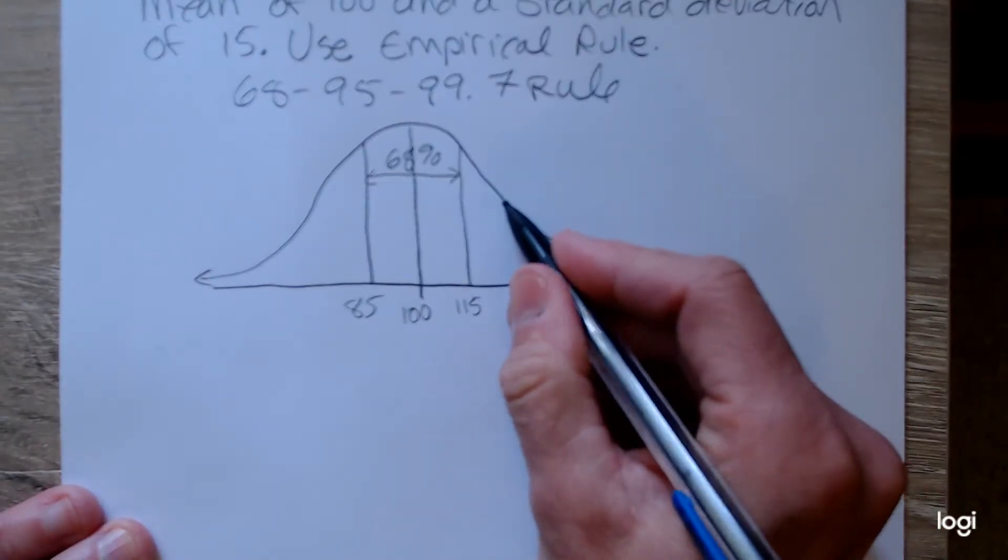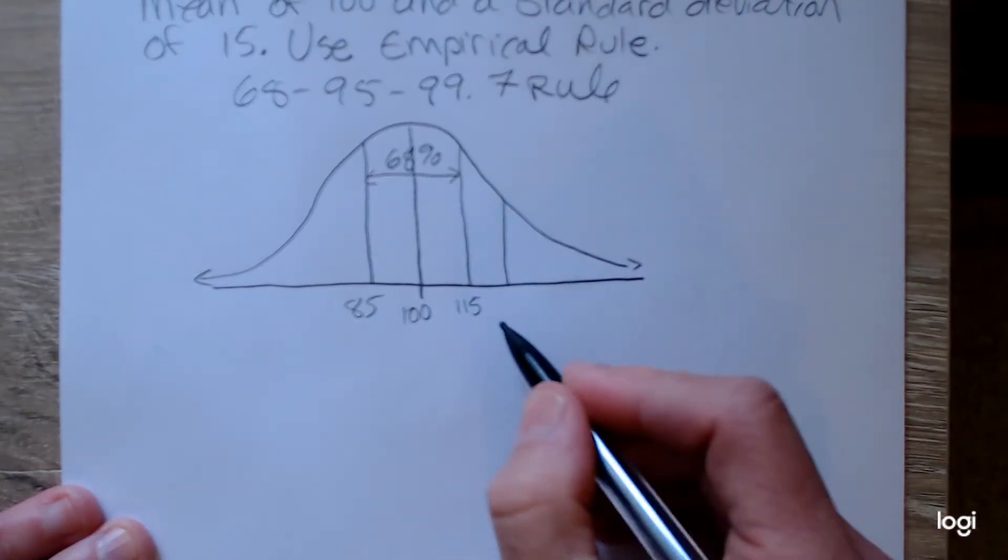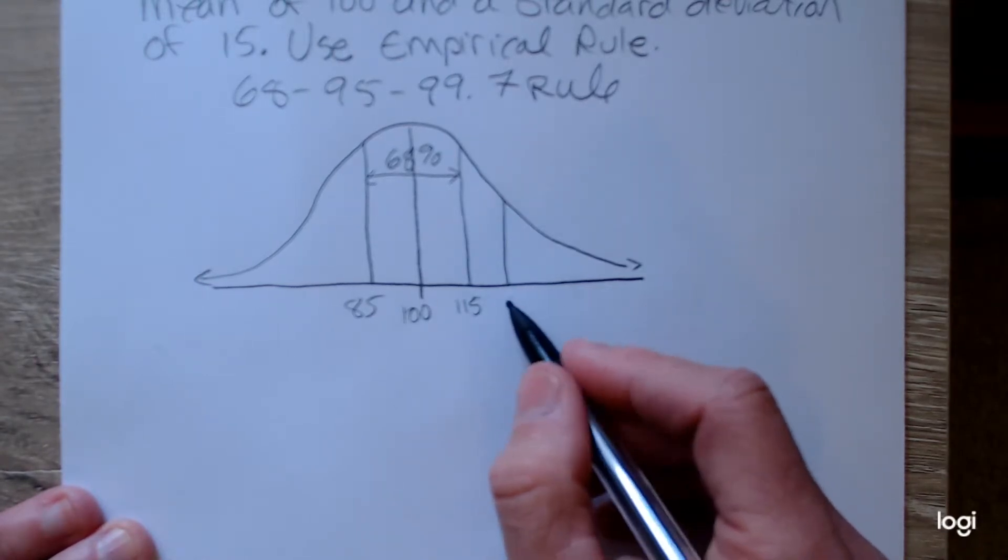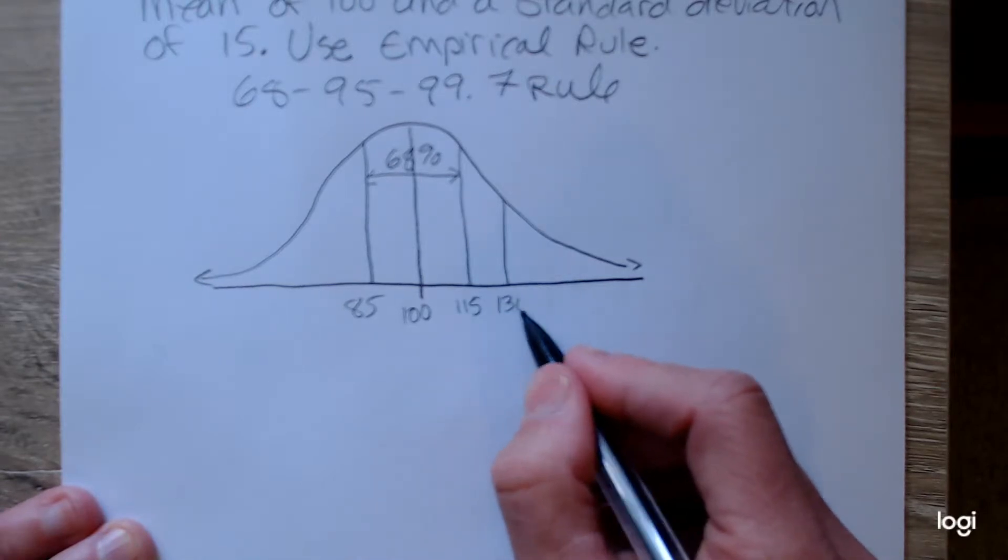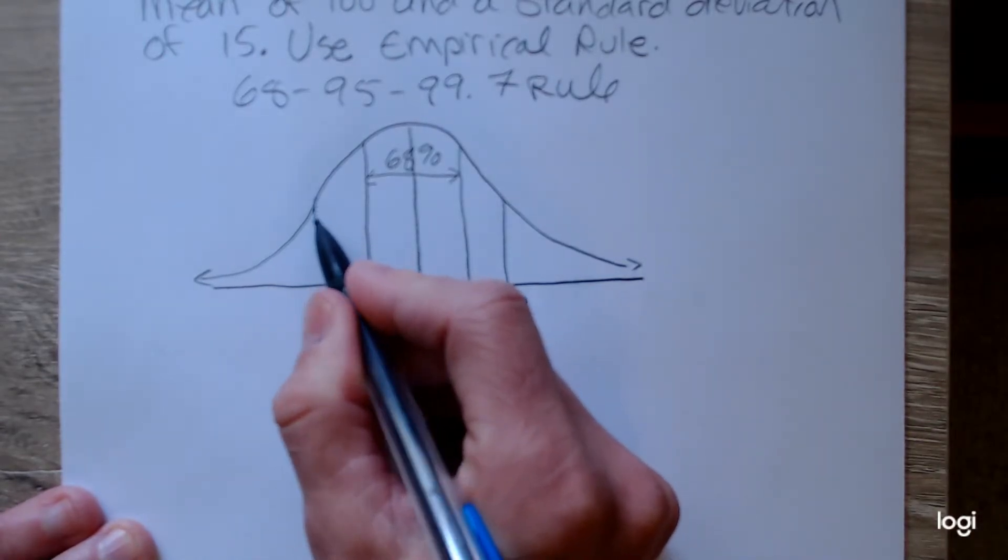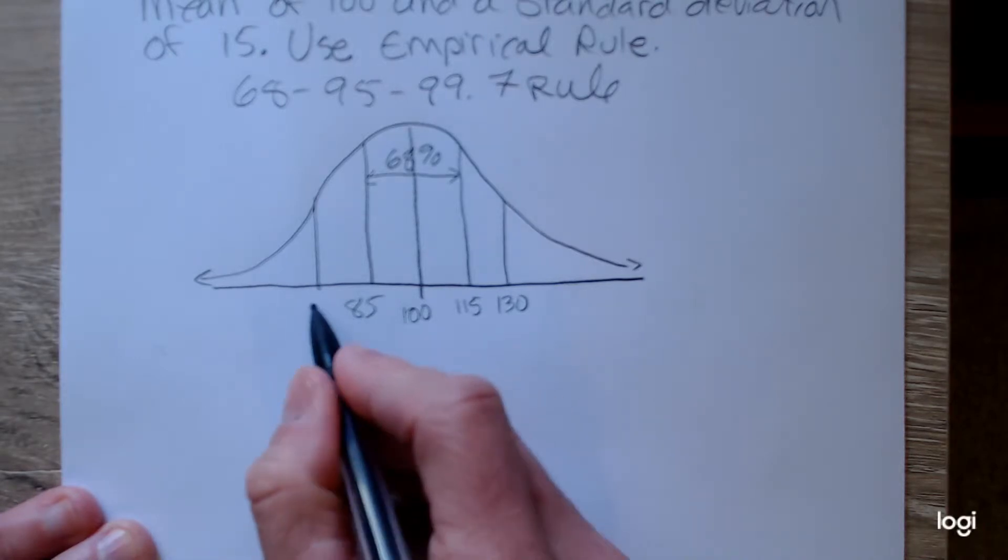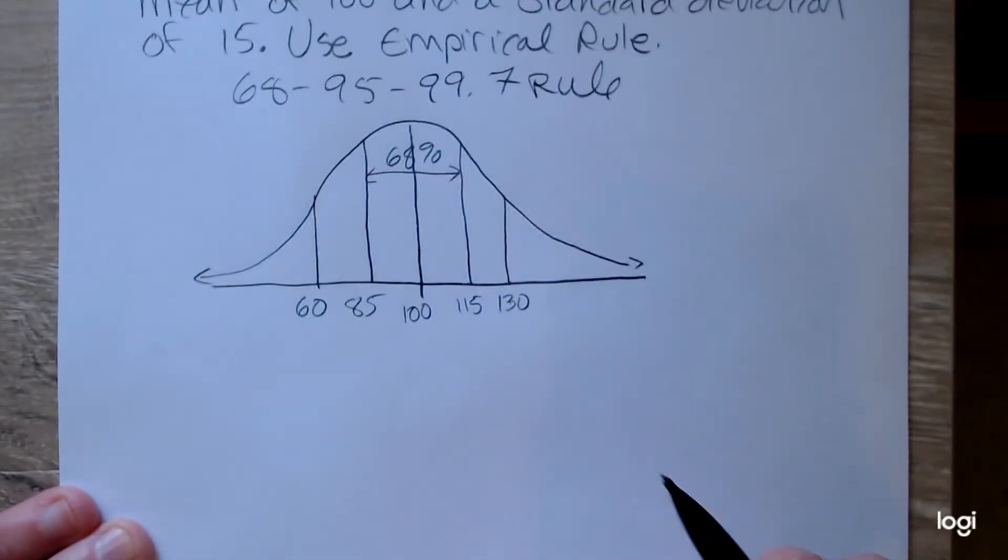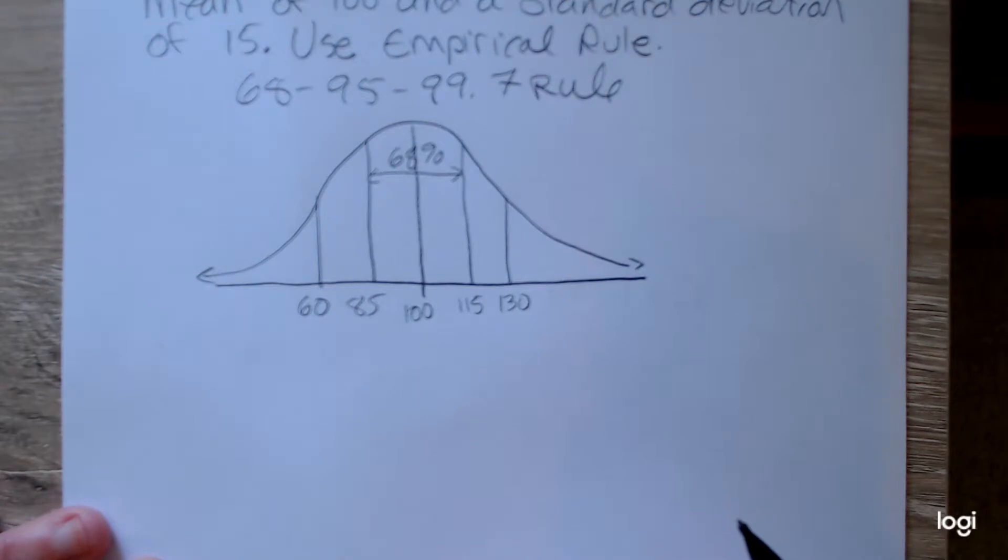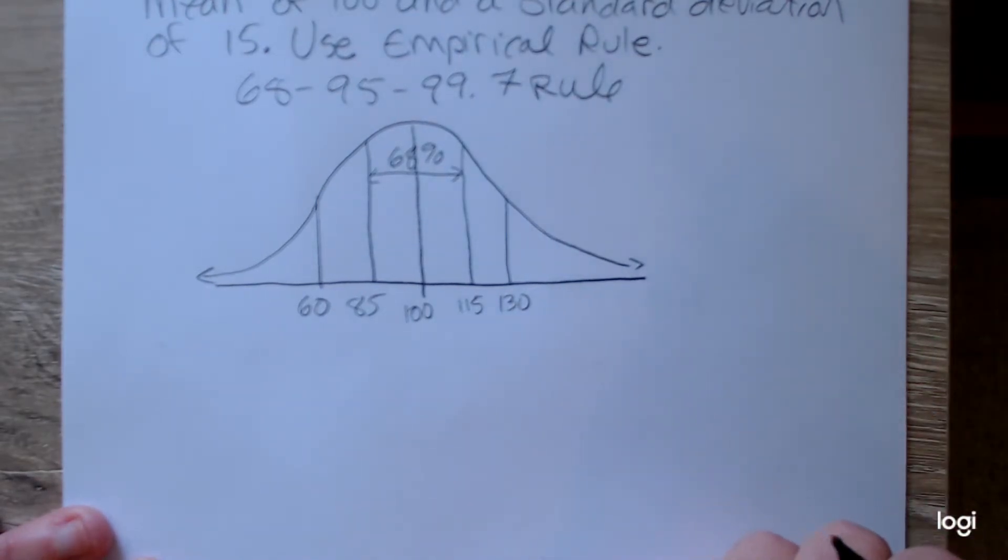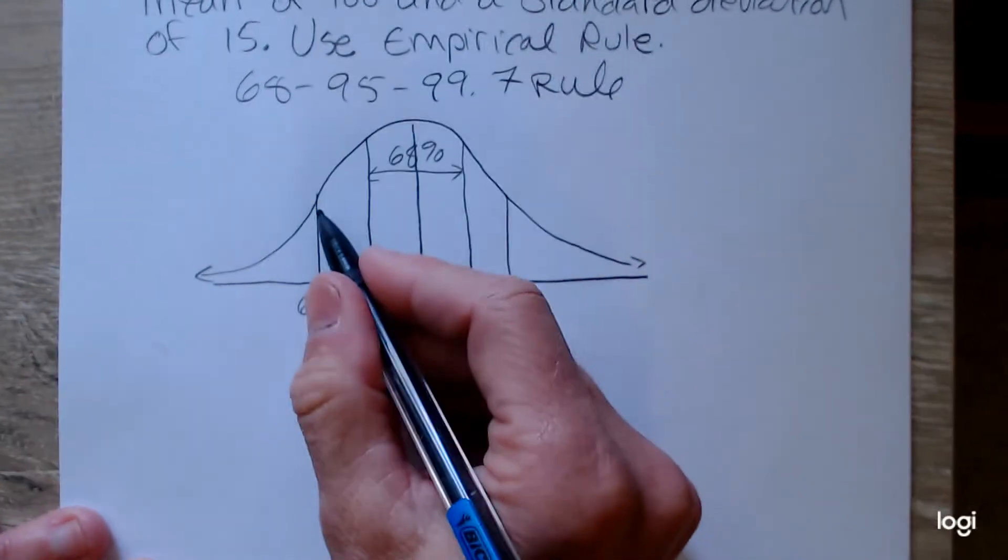So if I go out one more standard deviation, in other words, if I add one more standard deviation to the right, I'm at 130. And if I subtract another standard deviation going to the left, I'm at 60. Oh, I'm sorry. Yeah, no, that's right. I'm at 60. I'm a little tired today.